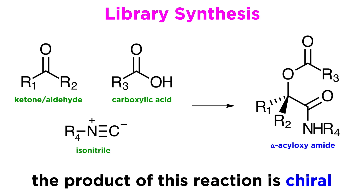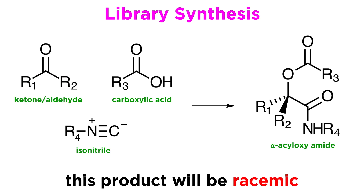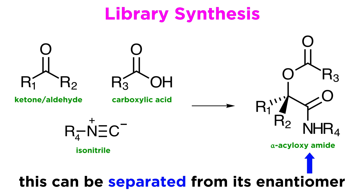Looking again at our generalized example, you will notice that the reaction leads to a chiral product. With the carbonyl group, if R1 does not equal R2, it is considered prochiral, so the product has a stereogenic center — this one here that used to be the carbonyl carbon. And since the reaction requires no activator or catalyst, the product will be racemic. It turns out that for the synthesis of libraries, this is not a major concern. Once an active compound has been picked up from a screen, the racemate can be easily deconvoluted, meaning that the enantiomers are separated, usually by chromatography on a chiral support, and the relative activity of each enantiomer can then be determined.